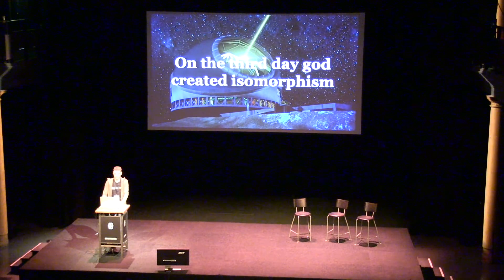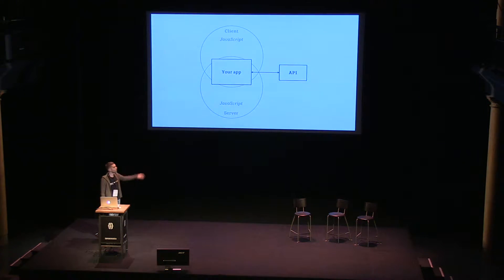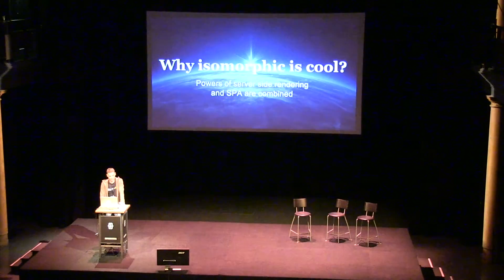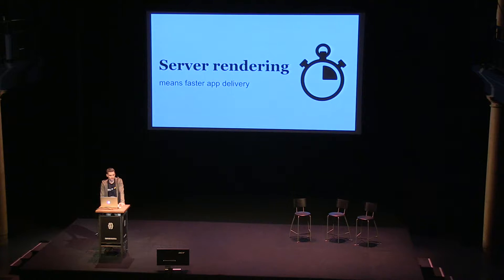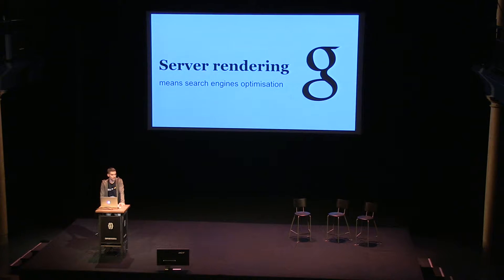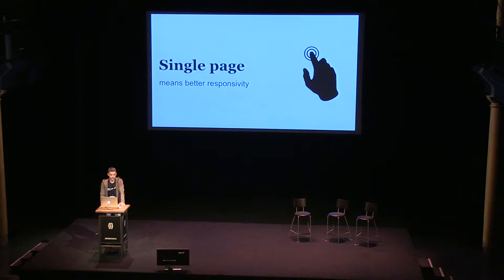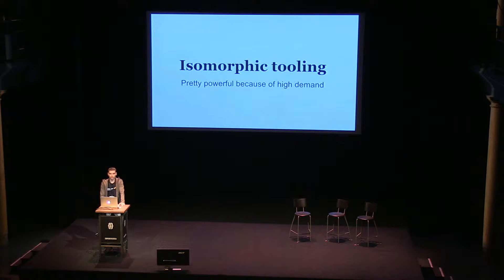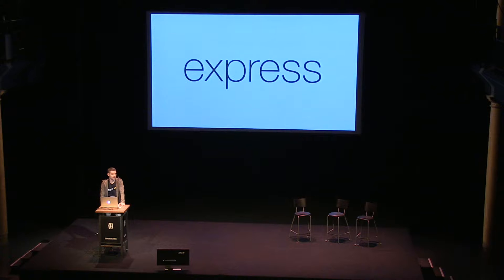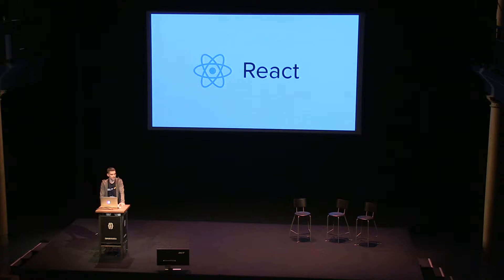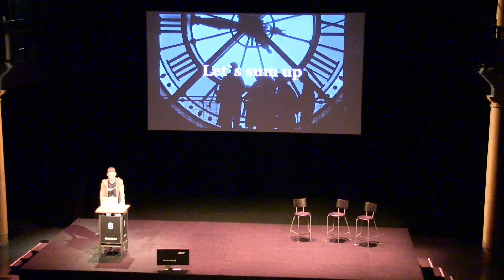So on the third day, God created isomorphism. There were a lot of applications built with JavaScript, so isomorphism — basically reusing server and client code — was naturally in JavaScript. Isomorphic is cool because it combines the power of server-side rendering and single-page applications. Server-side rendering means faster application delivery and search engine optimization, which is sometimes really crucial. Single-page applications still provide a nice and snappy user experience and responsivity. For isomorphic tooling, many of you know React and Express. Express is a must-have if you do isomorphic or server-side stuff with JavaScript.